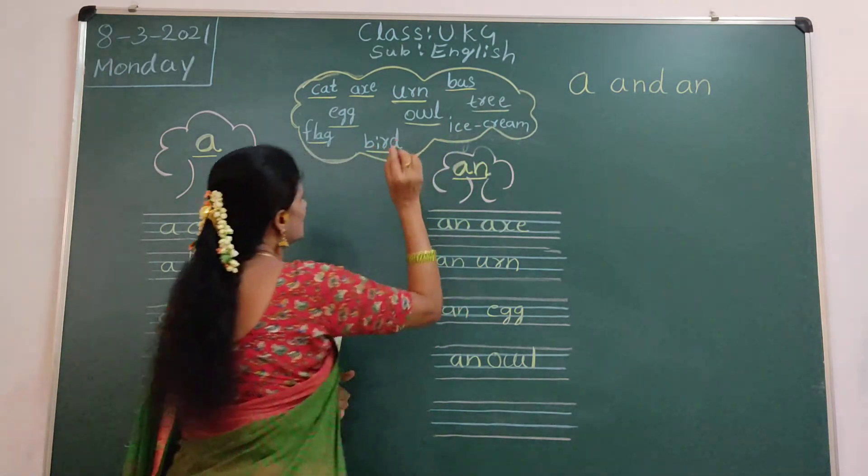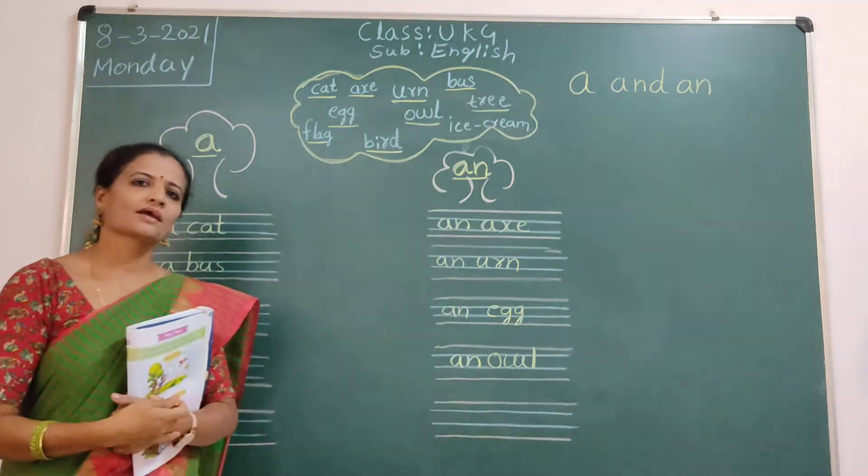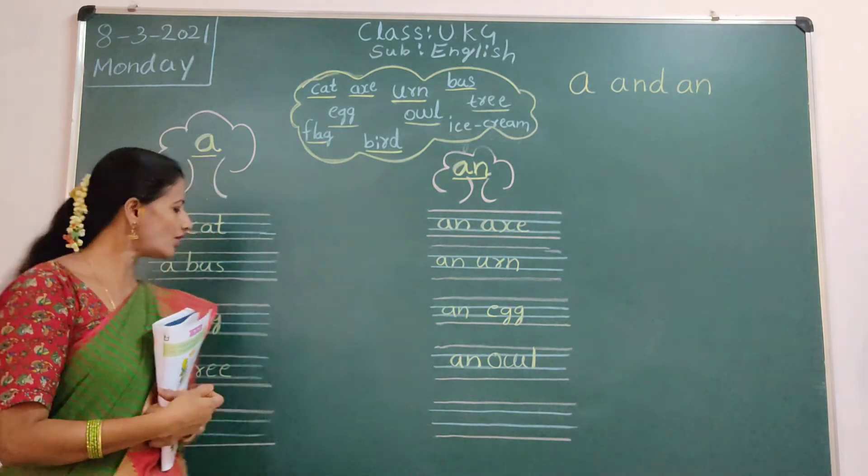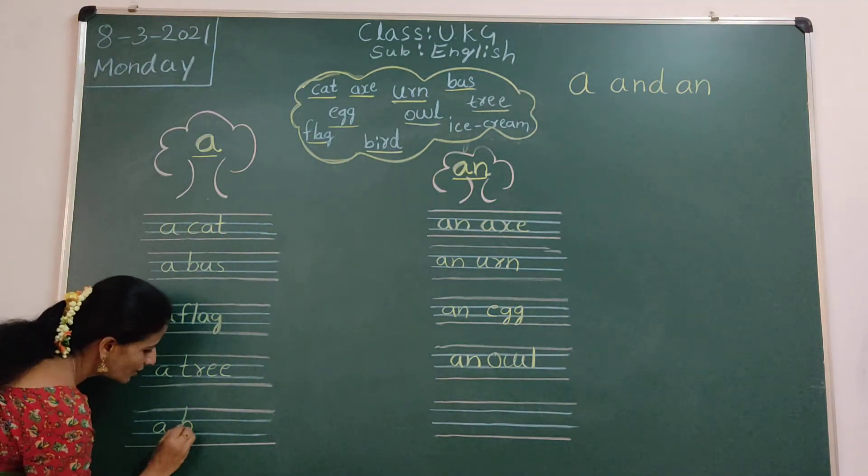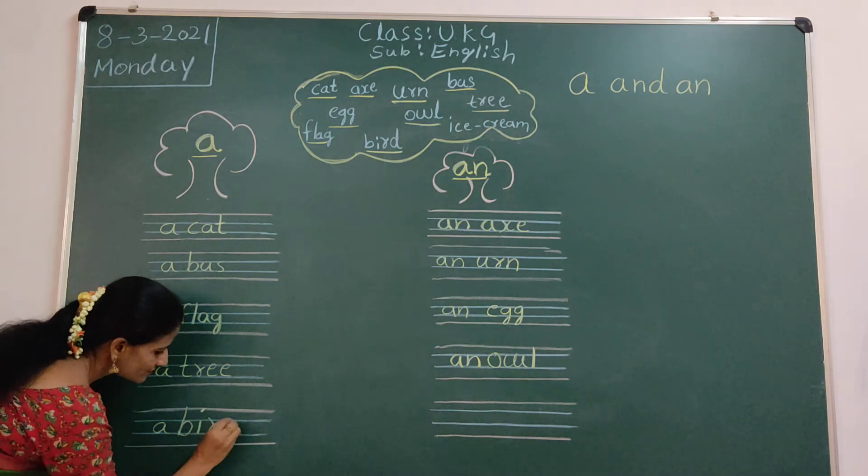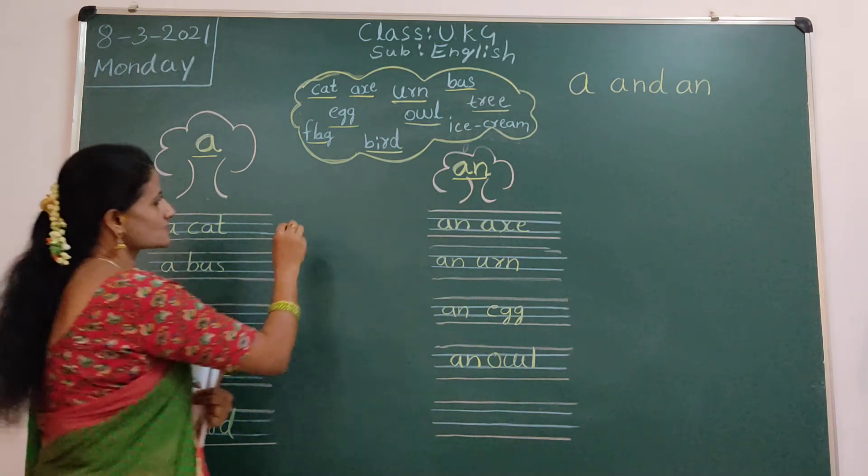Next, bird. B. Consonant. So, we will use A. A. Bird. Okay. Bird also finished.